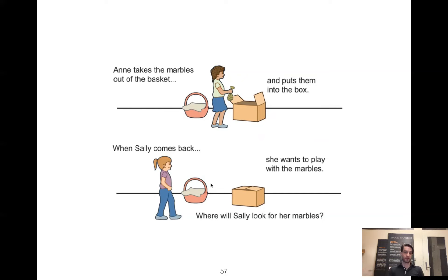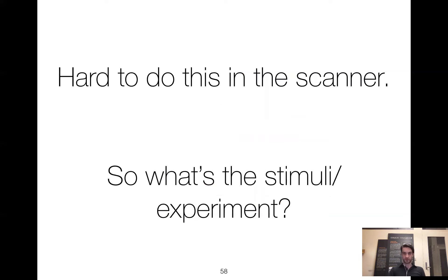That's an example of theory of mind — we know something that Sally doesn't. Now, this is a long story and it's kind of difficult to do in the scanner. So what exactly are the stimuli or the experiments that people do to study theory of mind in those cases?